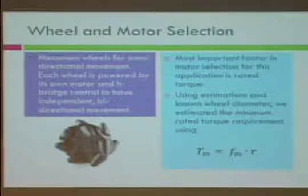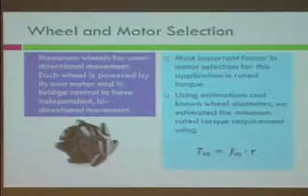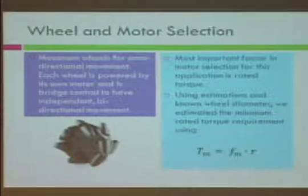For wheel and motor selection, we chose Mecanum wheels for omnidirectional movement. Each is powered by its own motor with an H-bridge for bidirectional independent movement. For motor selection, the most important aspect was finding enough torque to drive the robot. Using an equation from a motors and drives textbook, I estimated the robot weight at about 10 pounds and calculated the wheel radius at 0.43 inches, giving a required torque of 60.8 inch-ounces. The motors we selected can do 370 inch-ounces — much more, to account for friction and weight variation.